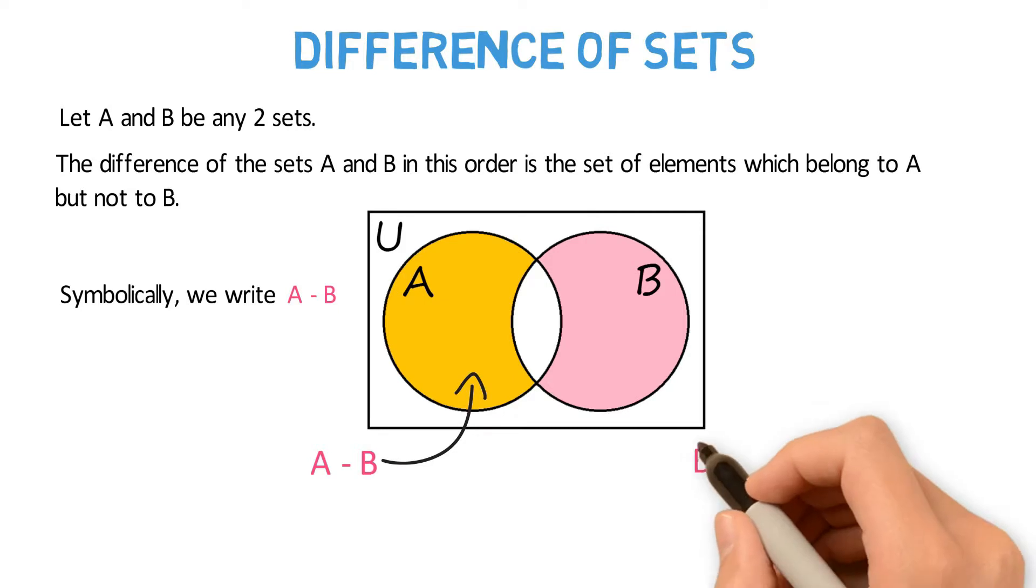we can represent B minus A in the Venn diagram. Note that A minus B and B minus A are different regions in the Venn diagram.